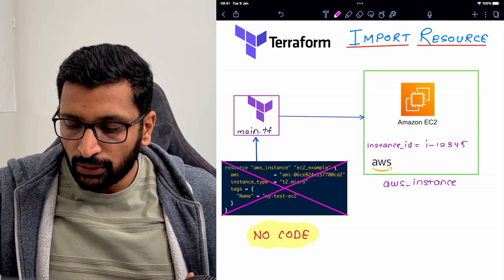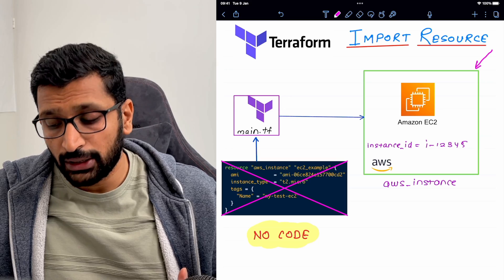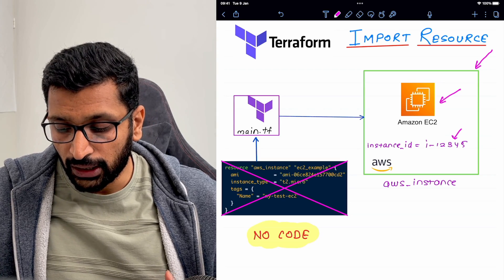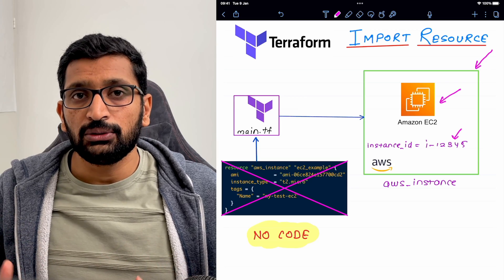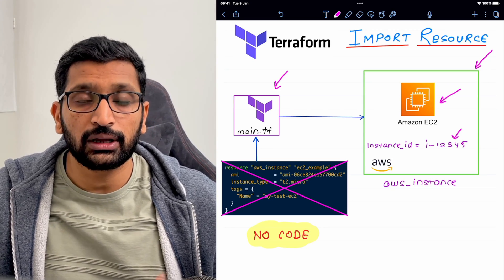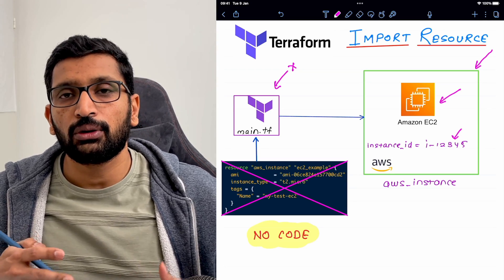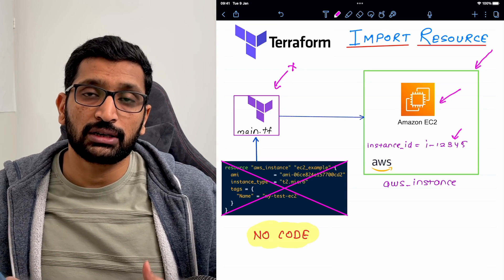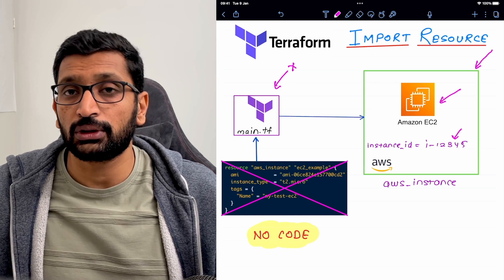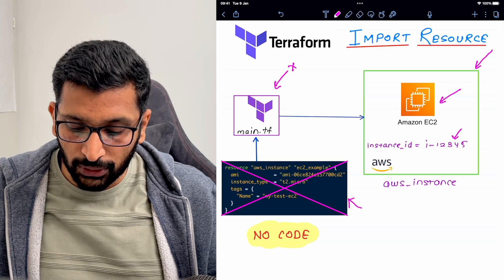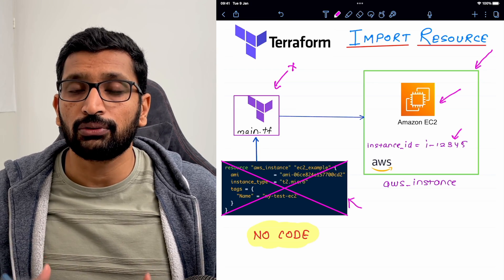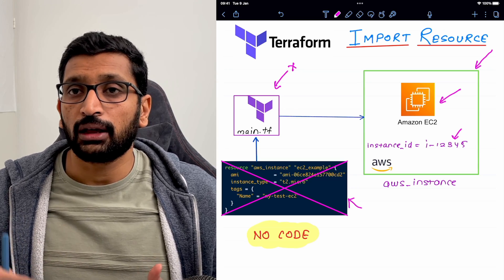Let's understand the situation. On the right-hand side, this is our AWS environment where we have already started an EC2 machine which is running, and it has a unique instance ID. But that EC2 instance was started manually. If we look on the left-hand side, we don't have the Terraform code for that particular EC2 machine. Whenever we talk about Terraform, we should have infrastructure as code for each resource on the cloud environment. So in that scenario, we need to import the resource back and reconstruct our Terraform file so we can later use Terraform init, plan, and apply.